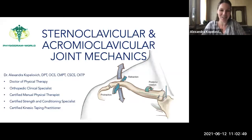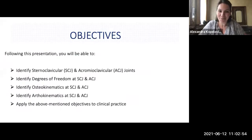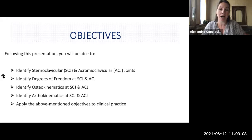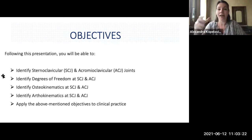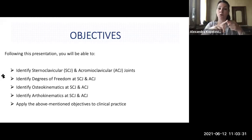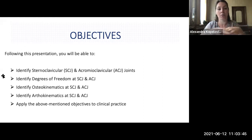Let's get into our objectives. We will identify the sternoclavicular and acromioclavicular joints, the degrees of freedom available at both joints, and examine osteokinematics and arthrokinematics. Osteokinematics refers to the gross bone movement itself; arthrokinematics — with the prefix arthro — refers to the small roll, glide, and spin of the joint. The most important goal is to apply this information clinically to any patient presenting with shoulder pain.